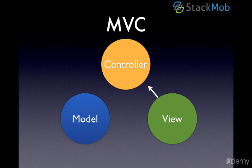What happens with Backbone is that you'll have a user interact with a view. Let's say they click on a button. Traditionally this would go to a controller, which would then notify the model that some button was clicked on, and let's say we need to save some data into our model. Instead of the model telling the view what to do, the view listens for any changes in the model, and that's how Backbone works — the view is listening for any changes in the model and then it updates itself.